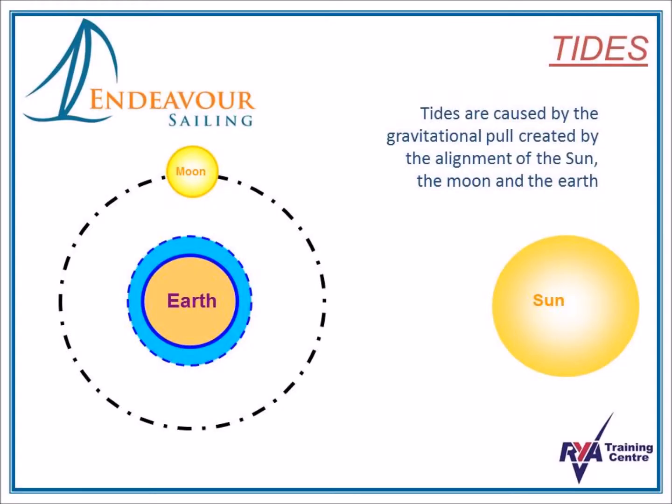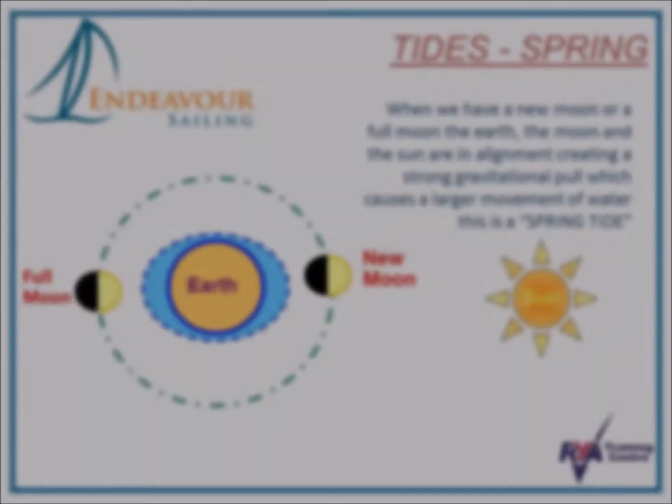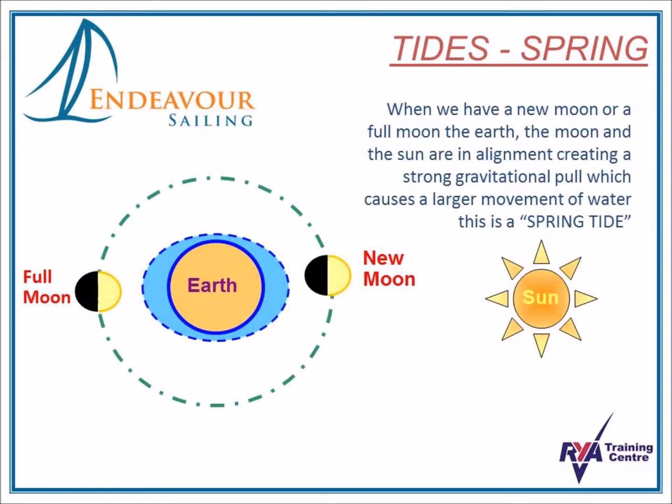Tides are caused by the gravitational pull between the Sun, the Moon and the Earth. When we have a new moon or a full moon, the Earth, the Moon and the Sun are in alignment, creating a strong gravitational pull. This causes a large movement of water. This is known as a spring tide.